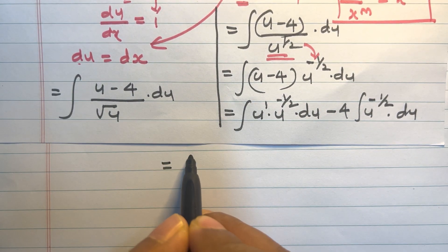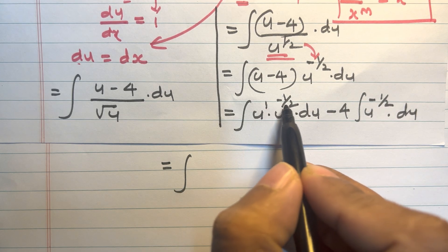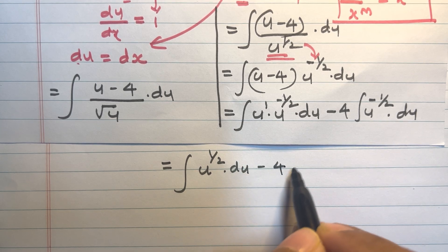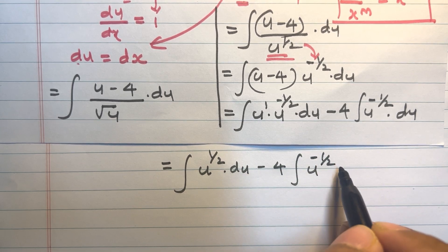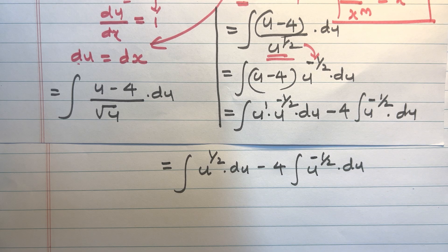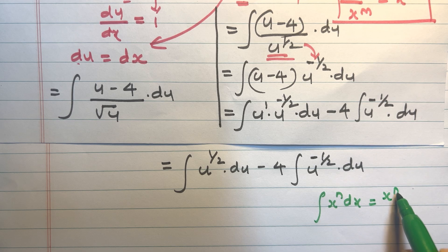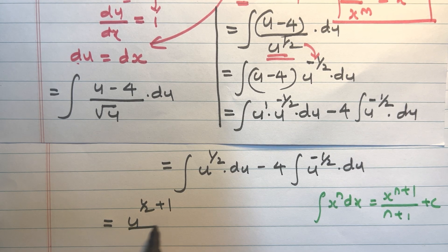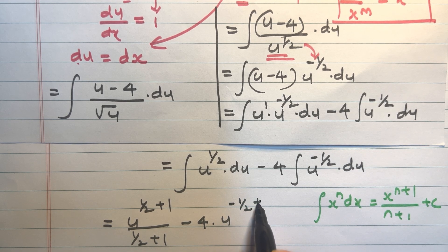Simplifying the exponents: integral of u raised to (1 minus 1/2) equals u raised to 1 by 2, minus 4 integral of u raised to minus 1 by 2 into du. Applying the power rule formula, integral of x raised to n dx equals x raised to (n+1) divided by (n+1) plus c, we get u raised to (1/2 + 1) divided by (1/2 + 1) minus 4 into u raised to (minus 1/2 + 1) divided by (minus 1/2 + 1).